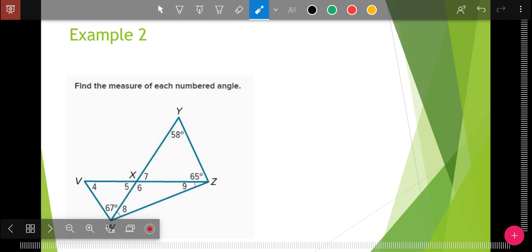Which angle would you find first? To me, I would find angle seven first. Angle seven is inside this triangle. I already know that 58 plus 65 plus angle seven equals 180. And so I get 123 plus angle seven equals 180. So angle seven equals 57 degrees. Now, the next thing I would notice is the angle seven and angle five are vertical angles. So if angle seven is 57, angle five is 57.